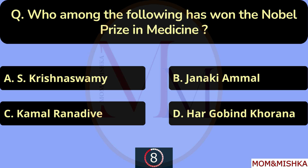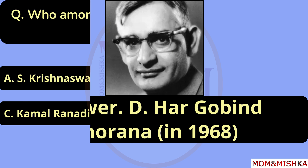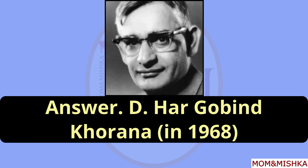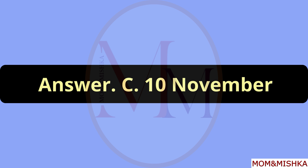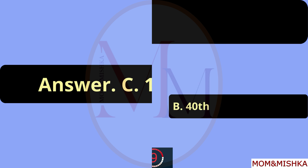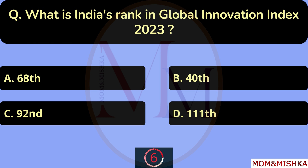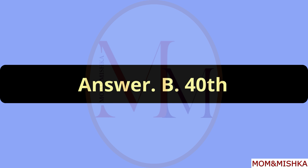Who among the following has won the Nobel Prize in Medicine? It's Har Govind Khorana. Option D, in year 1968. When is World Science Day for Peace and Development celebrated every year? On 10th November. Option C. What is India's rank in the Global Innovation Index 2023? 40th rank. Option B.